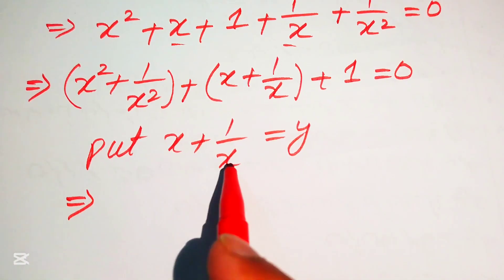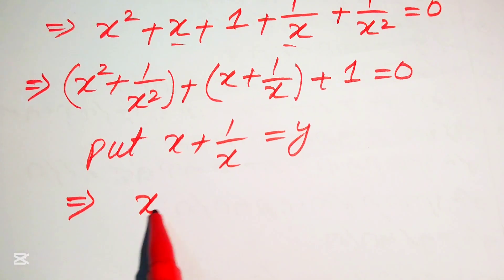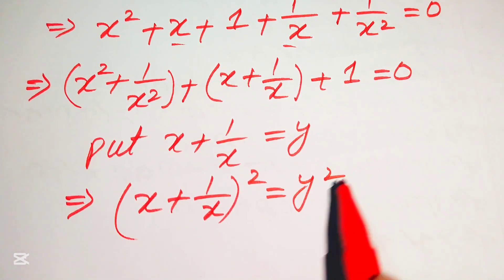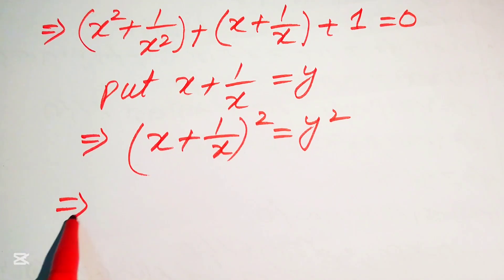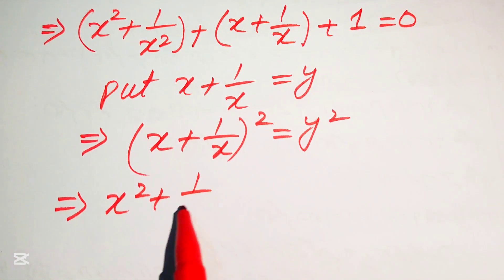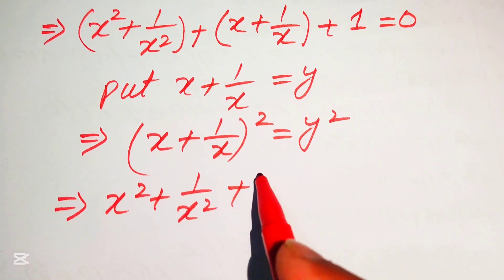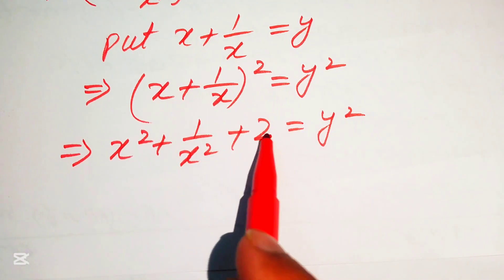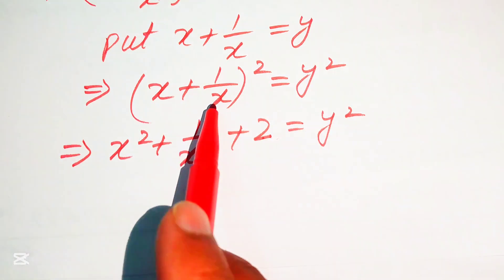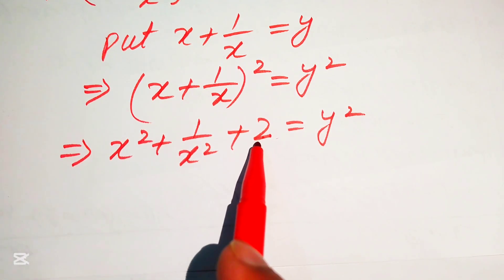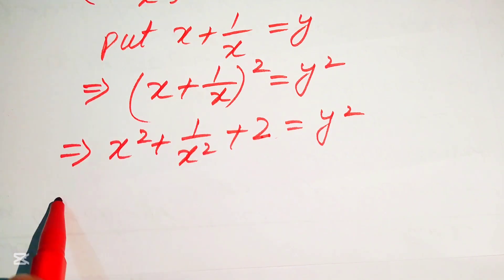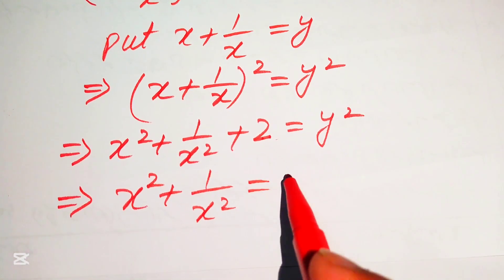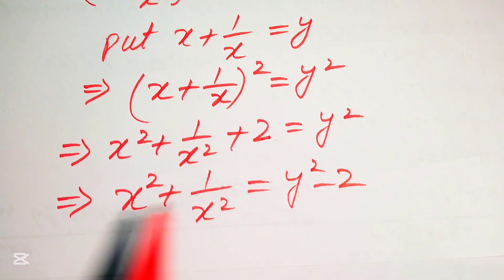Squaring both sides gives x plus 1 over x whole squared equals y squared. Expanding, x squared plus 1 over x squared plus 2 equals y squared, so x squared plus 1 over x squared equals y squared minus 2.